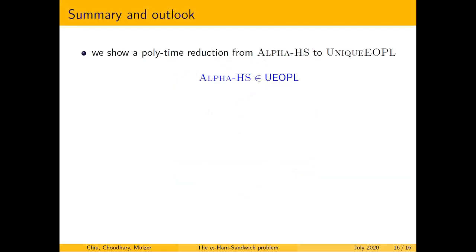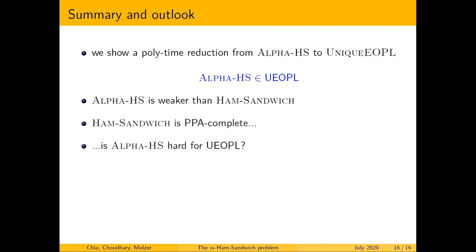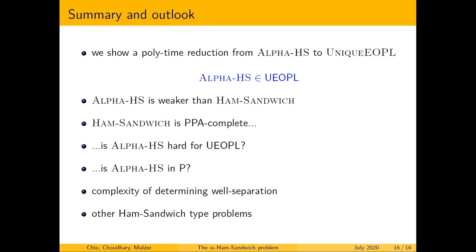To summarize, we show a polynomial time reduction from an instance of alpha ham sandwich to UEOPL. This also tells us that alpha ham sandwich is supposedly weaker than ham sandwich, which was not known earlier. The next question is: since ham sandwich is complete for PPA, is a similar result true for UEOPL and alpha ham sandwich? Can we show that alpha ham sandwich is hard for UEOPL, or perhaps more optimistically, is alpha ham sandwich in P? Some related open problems include determining the complexity of checking whether a point set satisfies well separation, and looking at other ham sandwich type problems. Thank you.